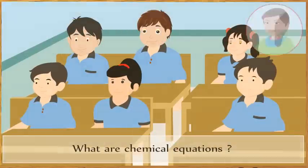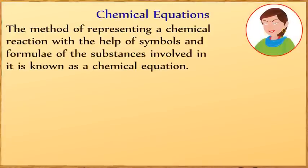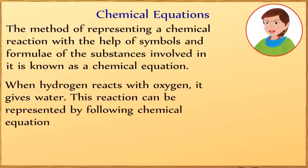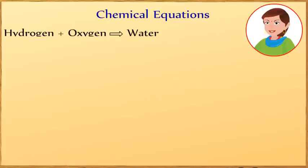What are chemical equations? The method of representing a chemical reaction with the help of symbols and formulae of substances involved is known as a chemical equation. When hydrogen reacts with oxygen it gives water. This reaction can be represented by the following chemical equation: Hydrogen plus oxygen is water.